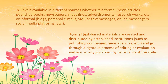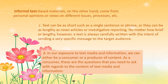Text is available in different sources — formal ones such as news articles, published books, newspapers, magazines, advertisements, and research works; or informal ones like blogs, personal emails, SMS, online messengers, and social media platforms. Formal text-based materials are created and distributed by established institutions such as publishing companies and news agencies, and go through a rigorous process of editing or evaluation, usually governed by censorship of the state. Informal texts, on the other hand, come from personal opinions or views on different issues.